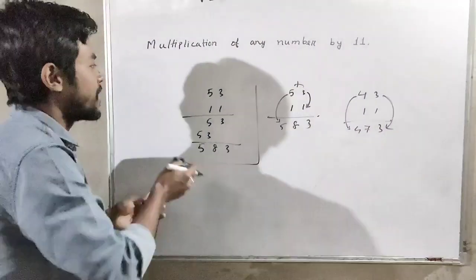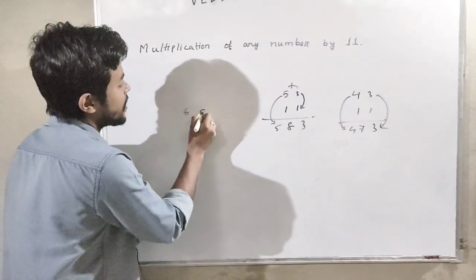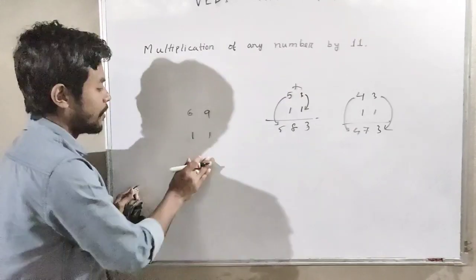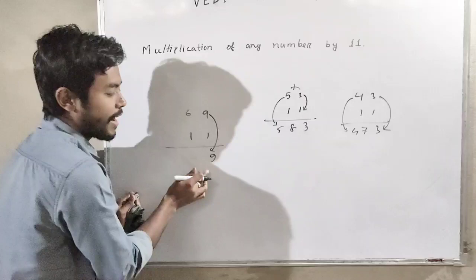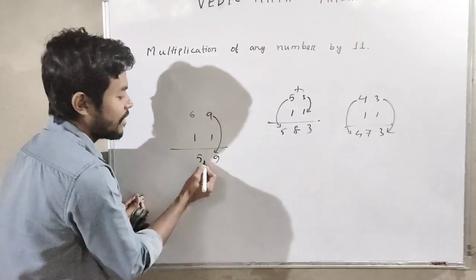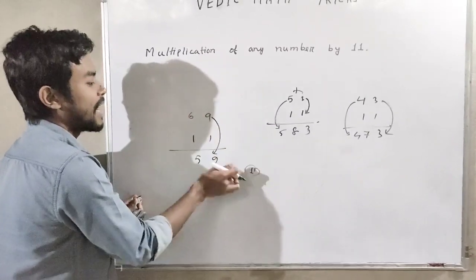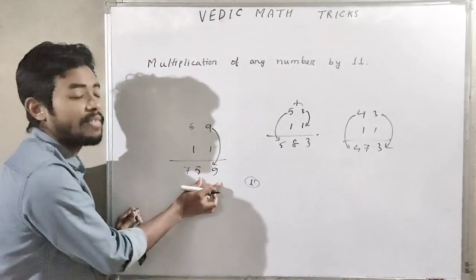Let us take another example: 69 by 11. Here 9 is replaced as this 9, then 6 plus 9 is 15. 15, so 5 and carry 1, then 6 plus 1 is 7. So 69 into 11 is 759.